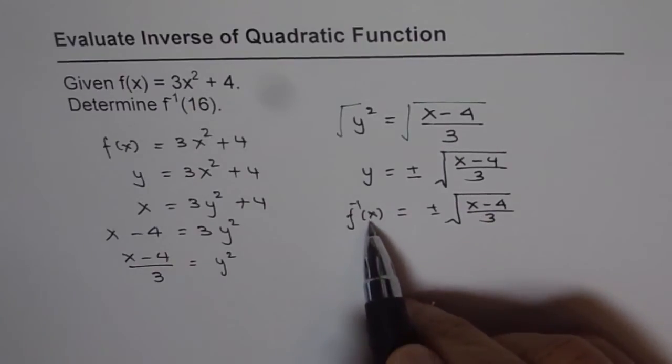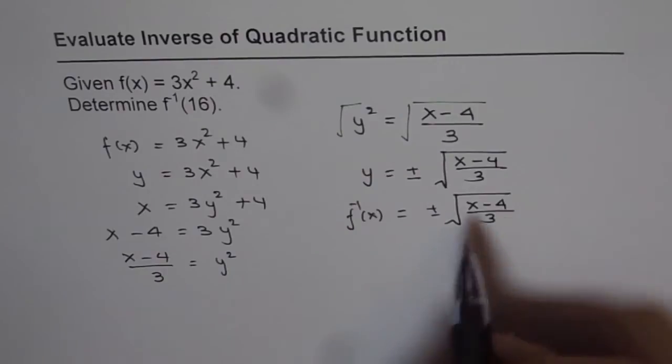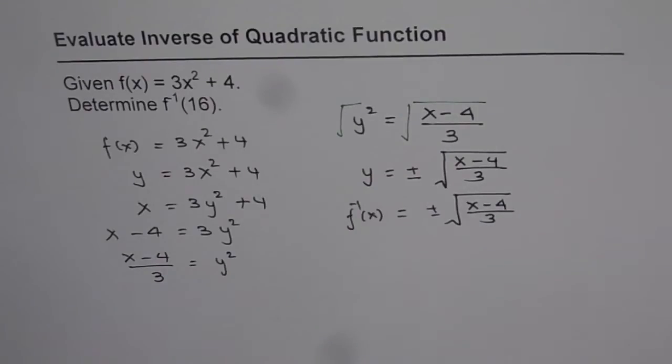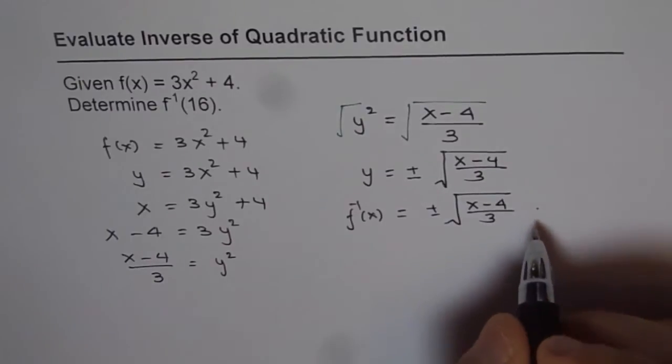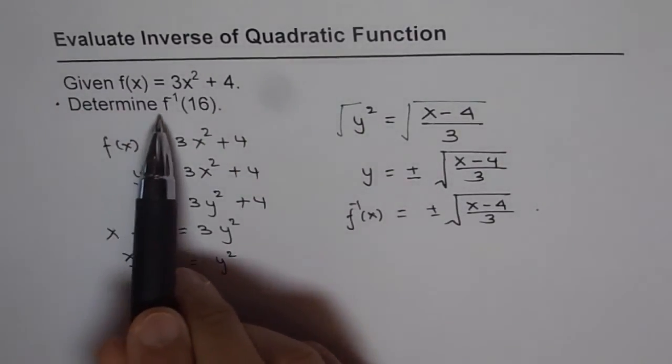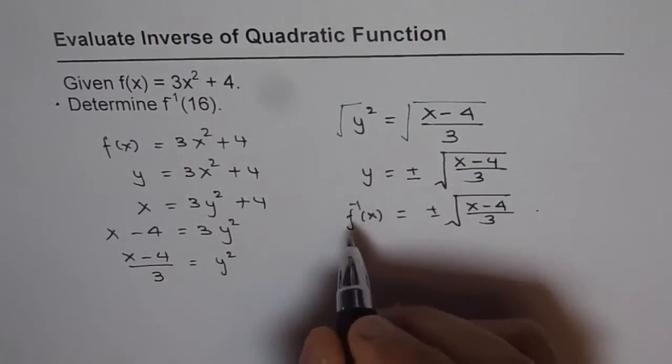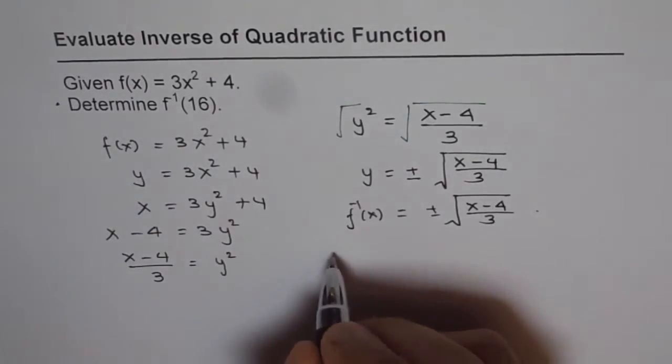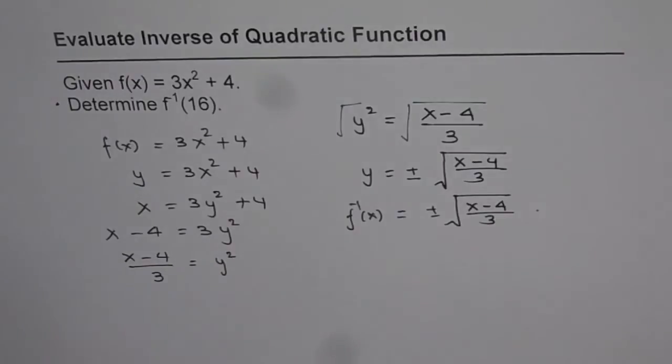Now you can see for yourself that for a given value of x, we will have maybe two values. Except for x equals 4, we can have two values for inverse of a function. So first you find inverse, then answer the question. Really the question was, determine f inverse of 16. So what is this value?